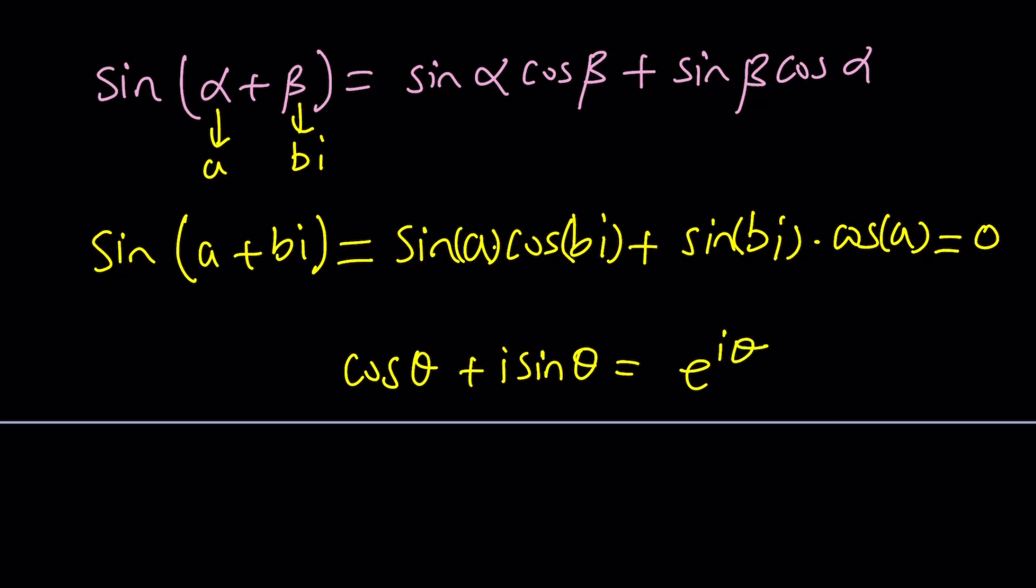So cosine of bi, if theta is bi, then we can have cosine of bi plus i sine of bi equals e to the power i times bi. That is i times bi is bi squared, which is negative b. So that's what cosine bi gives us.